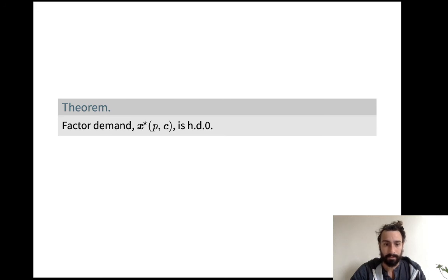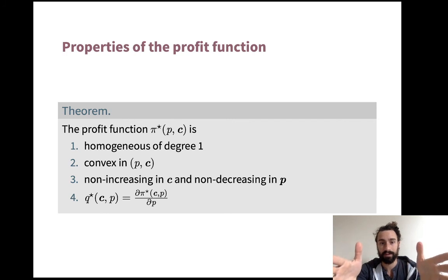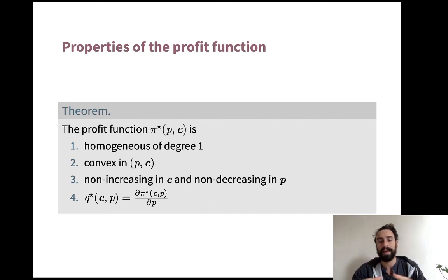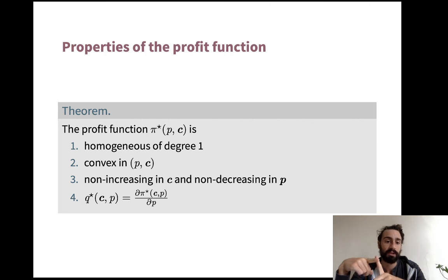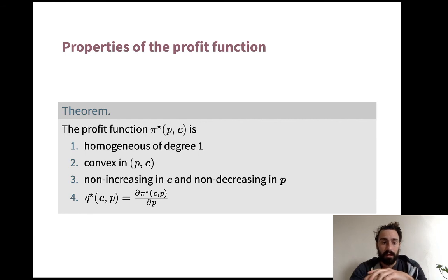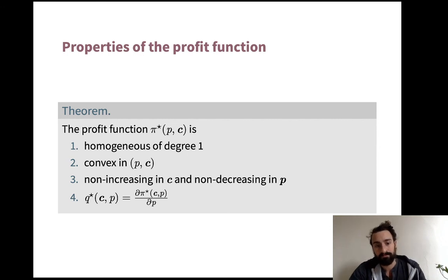Now here are the properties of the profit function, which is key to understanding how to analyze the output of our model. This corresponds to two prior sets of slides with theorems about expenditure minimization and cost minimization, giving a laundry list of properties of those optimized functions. The profit function has four key qualities. The first is it's homogeneous degree one.